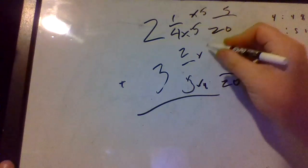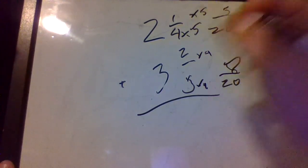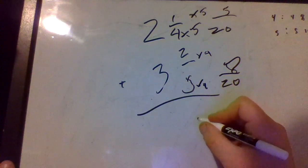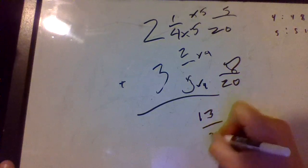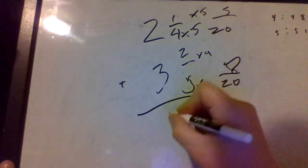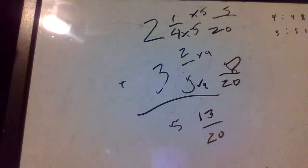So we add the numerators. Five plus eight is 13, we keep the denominator, and then two plus three is five. So our answer is five and thirteen over twenty, and that's the simplest that we can get it.